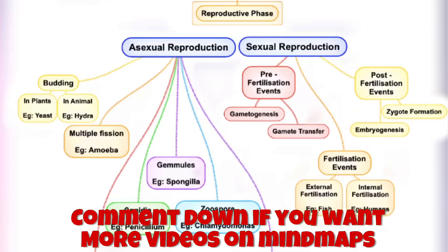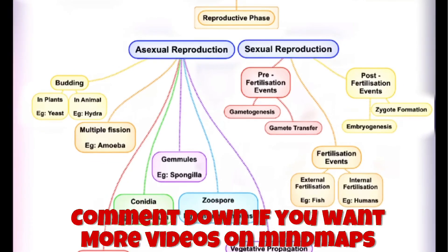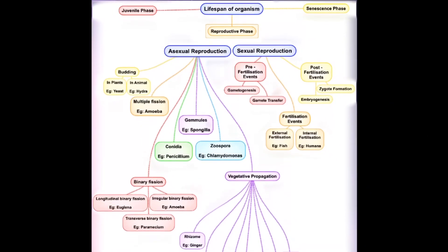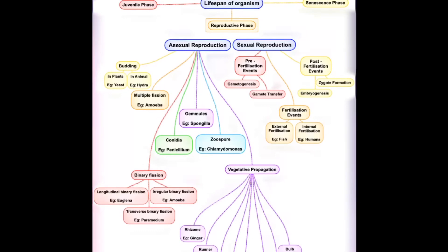Embryogenesis refers to the process of development of the embryo from the zygote. During embryogenesis, the zygote undergoes cell division (mitosis) and cell differentiation. Animals are categorized into oviparous and viviparous based on whether the development of the zygote takes place inside or outside of the female parent.